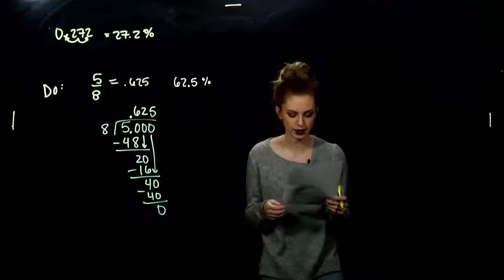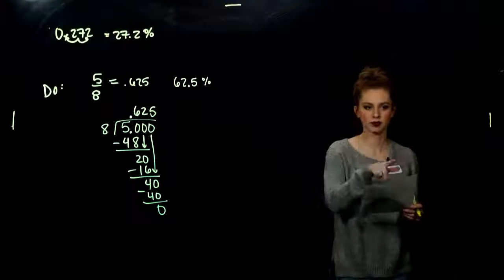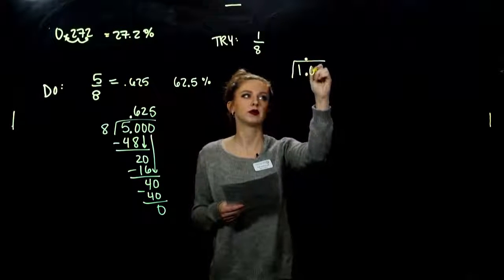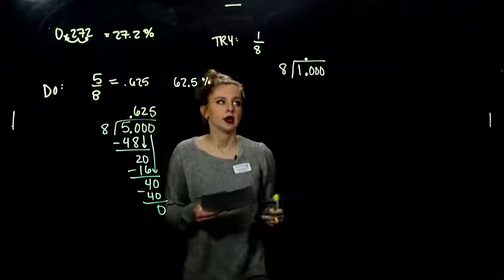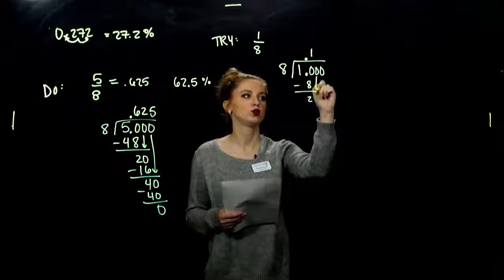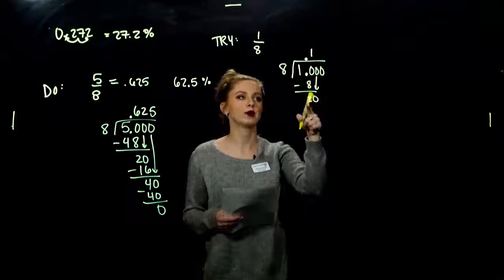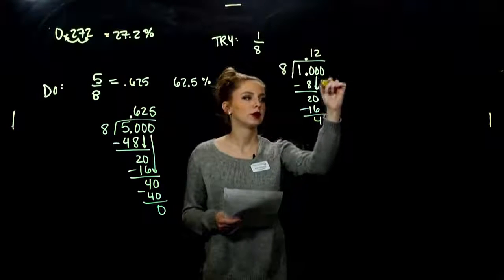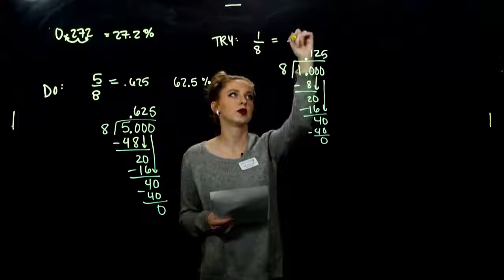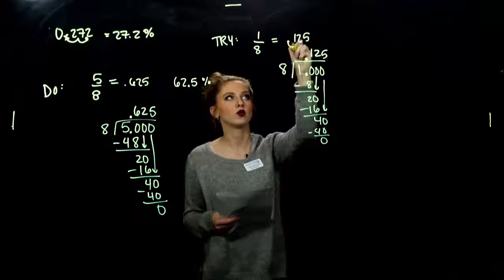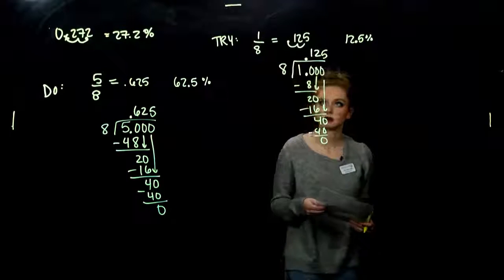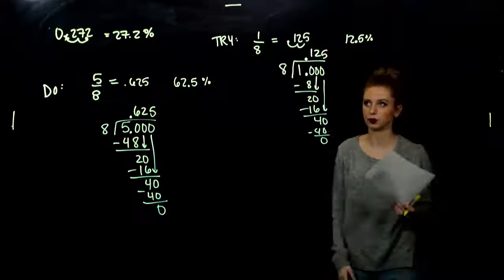Convert 1/8 to percent notation. First, 1/8 to a decimal via long division: 1 inside, 8 on the outside. 8 into 10 once, remainder 2. 8 into 20 twice — 16, remainder 4. 8 into 40 five times exactly. So as a decimal: 0.125. As a percentage, moving one, two decimal places to the right and adding the percent symbol: 12.5%. All three forms are equivalent, but used in different contexts.